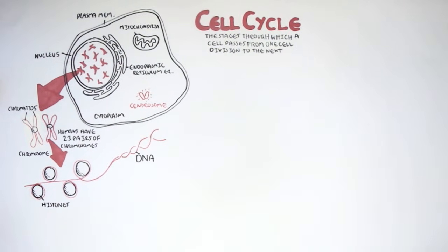Now this is important to understand: we have 23 pairs of chromosomes, which means 46 chromosomes. Keep that in mind.